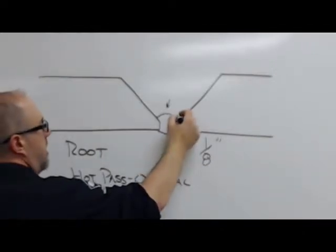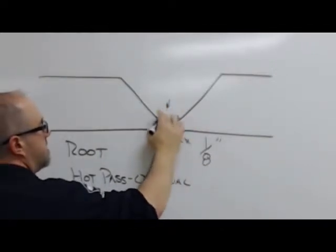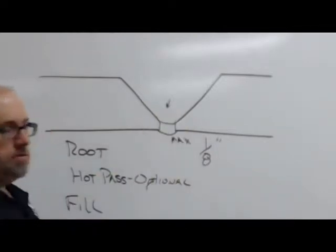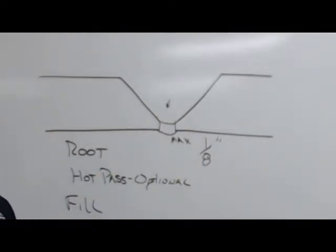So, when I get done with my root, I'm going to look inside my pipe, see if it passes a visual on the inside. And if it does, I'm going to grind out a big chunk of this root face. So, I'm going to come up with my grinder, make a nice, smooth surface that will accept the fill pass.